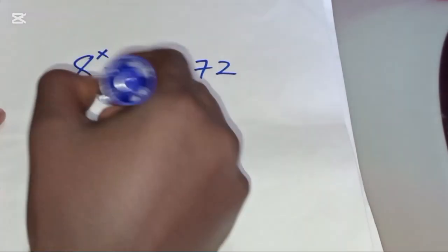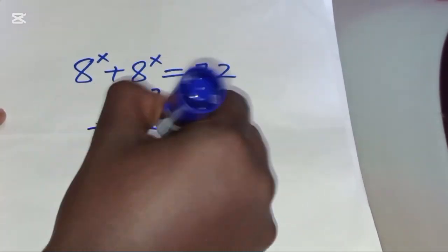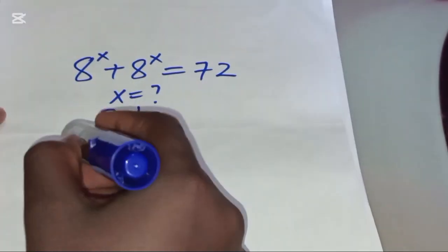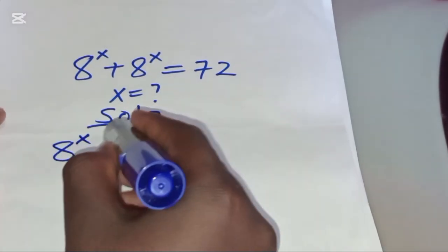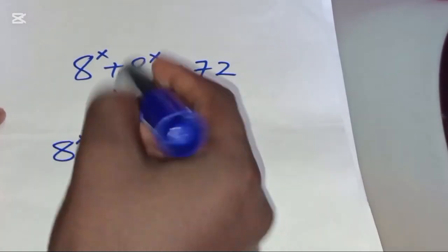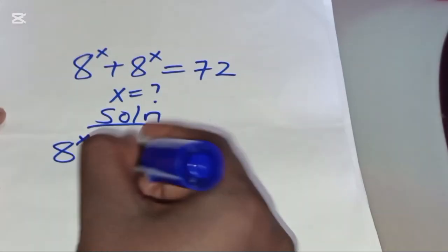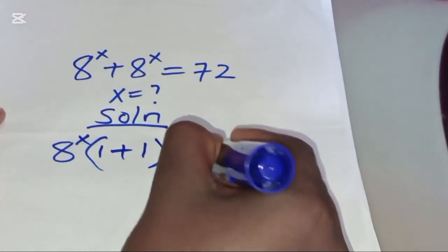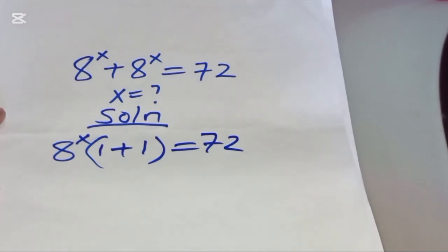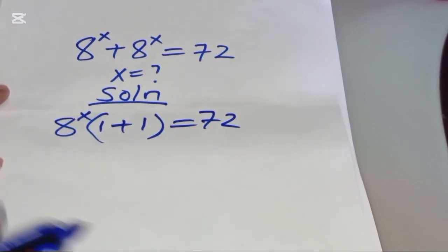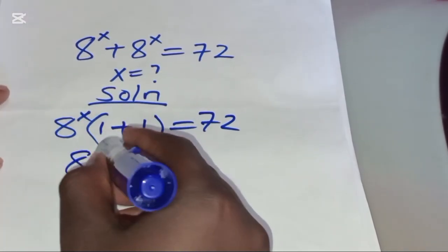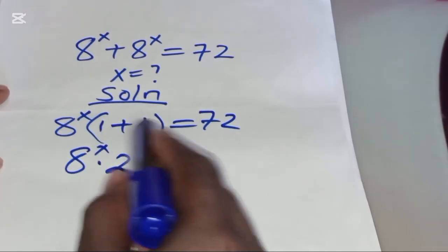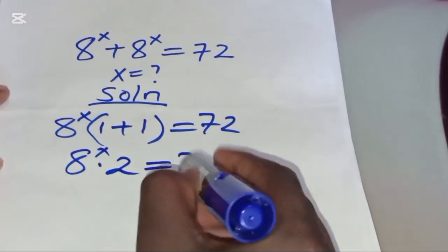Now for the solution, from what we have here, 8 to the power x is common, so we factor out 8 to the power x. That means 8 to the power x divided by 8 to the power x gives 1 plus 1, and this is equal to 72. So we'll have 8 to the power x multiplied by 2 — that's 1 plus 1 — equal to 72.